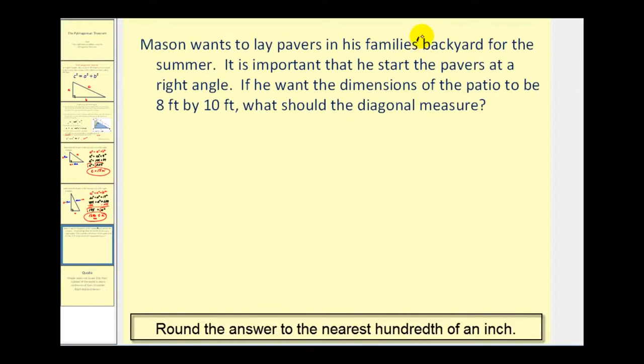Mason wants to lay pavers in his family's backyard for the summer. It is important that he start the pavers at a right angle. If he wants the dimensions of the patio to be 8 feet by 10 feet, what should the diagonal of the patio measure?